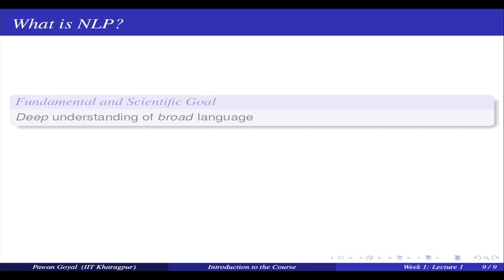This lecture will end with discussing what NLP is and its main goals. There is a very broad scientific goal of NLP: can we understand language, can we have a deep understanding of how humans process language, and can we teach computers how to understand language? That is the deep scientific goal behind NLP — can we teach computers to understand language and respond with humans the way humans do. That is a very long-standing goal of NLP, which we would say is mainly a fundamental scientific goal.